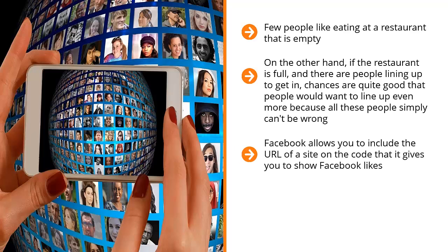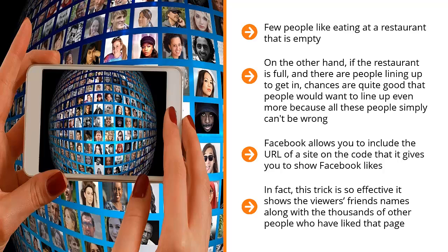Facebook allows you to include the URL of a site in the code it gives you to show Facebook likes. Embed that code onto your squeeze page to give the impression that a lot of people already like your squeeze page. In fact, this trick is so effective that it shows the viewer's friends' names along with the thousands of other people who have liked that page. Piggyback on this social pull and give the viewer the push he or she needs to sign up to your list.